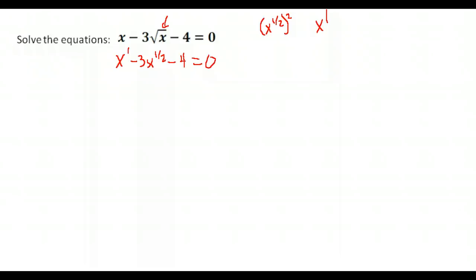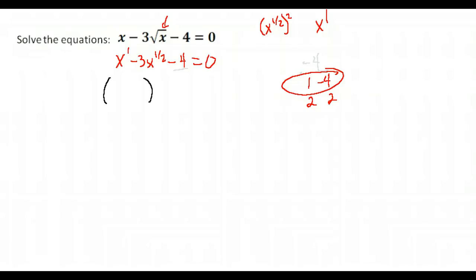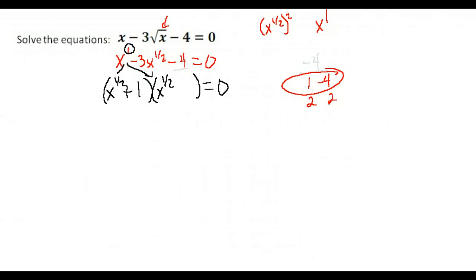We look at the end term, negative 4, and need factors of negative 4 that add to equal negative 3. Possible factor pairs are 1 and 4, and 2 and 2. If we use positive 1 and negative 4, they multiply to negative 4 and add to negative 3 — those work. When separating into parentheses, be careful: we have x to the first power, and cutting it in half gives x to the one-half in each parenthesis. Our factors are x to the one-half plus 1 and x to the one-half minus 4.